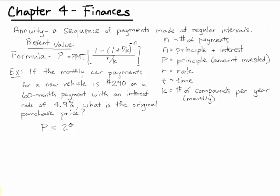We'll plug $290 into the PMT, setting up the rest of the formula. Interest rate is .049 as a decimal. And it doesn't state that it's compounded monthly, but since we're making monthly car payments, we assume monthly compound. So K is 12.